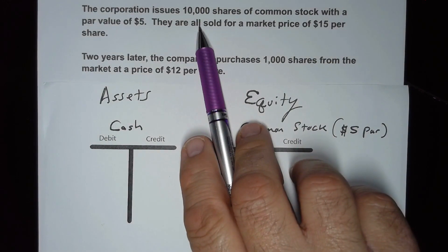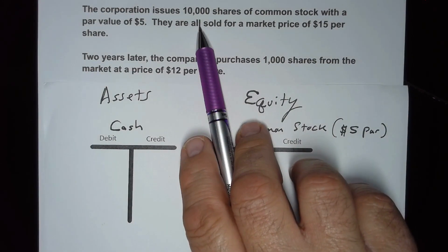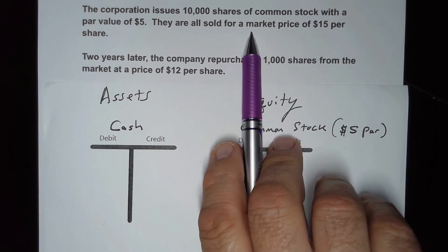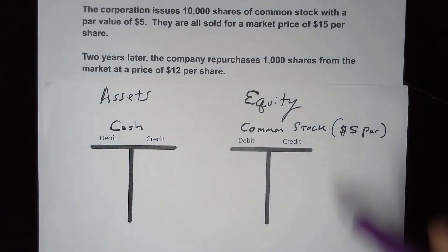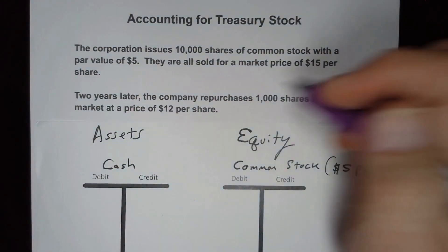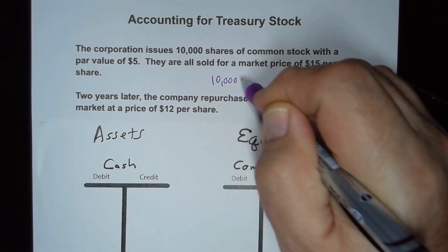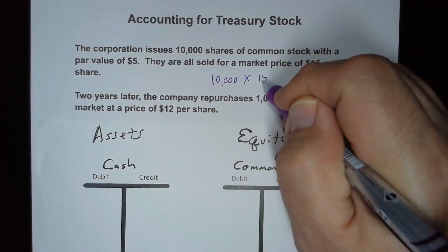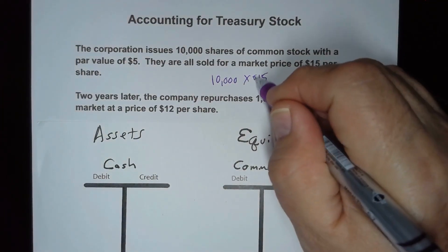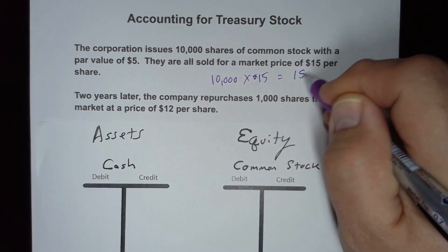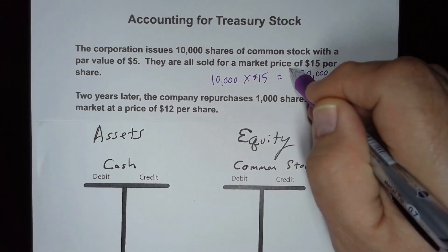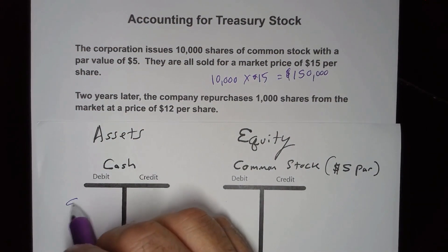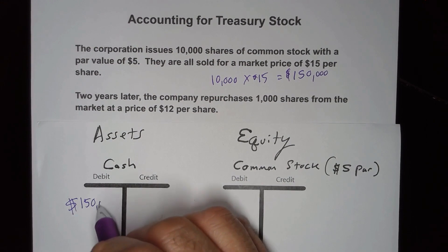Let's start with the 10,000 shares of common stock with a par value of $5, sold at a market price of $15 per share. That means 10,000 shares times $15 per share — that's going to be cash coming in of $150,000, so we're going to debit cash for $150,000.